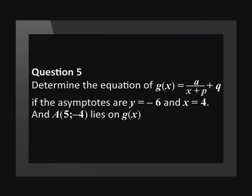Let's move on to Question 5. Determine the equation of g of x equals a over x plus p plus q, if the asymptotes are y equals negative 6 and x equals 4, and point A at (5, negative 4) lies on g of x.